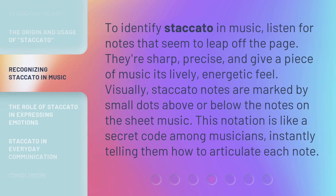To identify staccato in music, listen for notes that seem to leap off the page. They're sharp, precise, and give a piece of music its lively, energetic feel. Visually, staccato notes are marked by small dots above or below the notes on the sheet music. This notation is like a secret code among musicians, instantly telling them how to articulate each note.